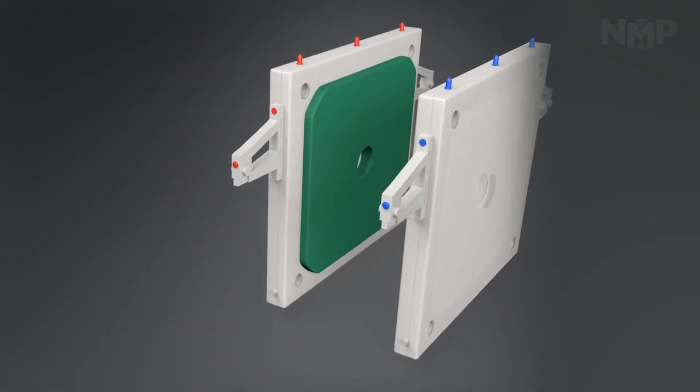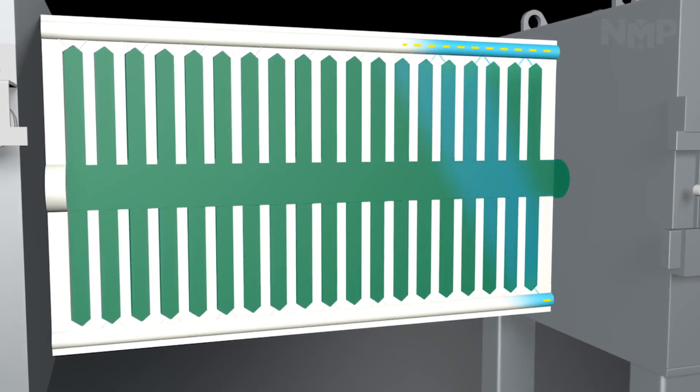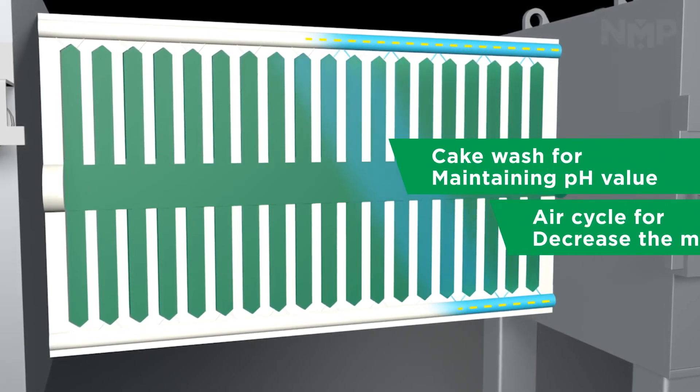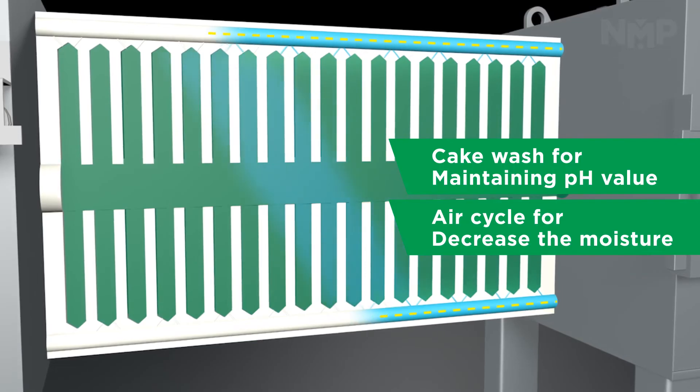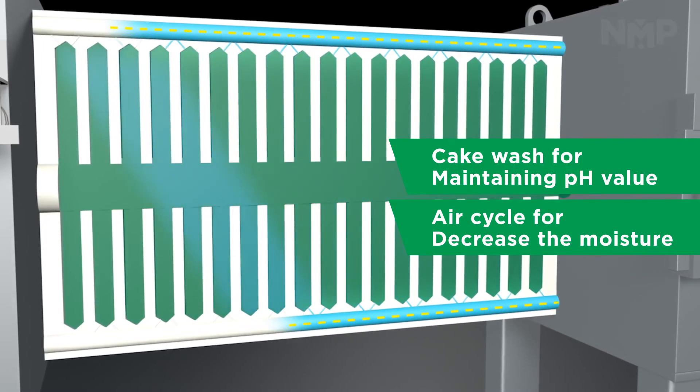Cake wash or air cycle is useful for maintaining pH values of the filter cake and decreasing the moisture in the filter cake. It is applied in a diagonal direction.